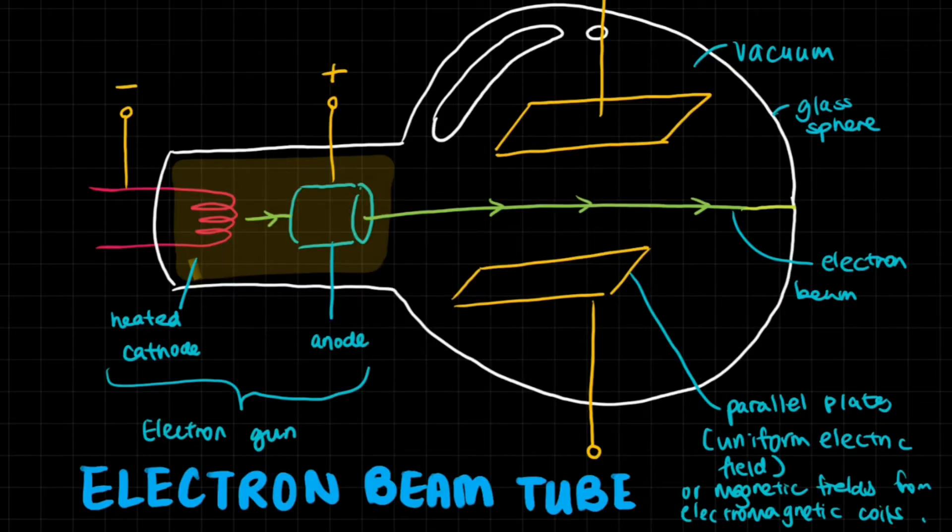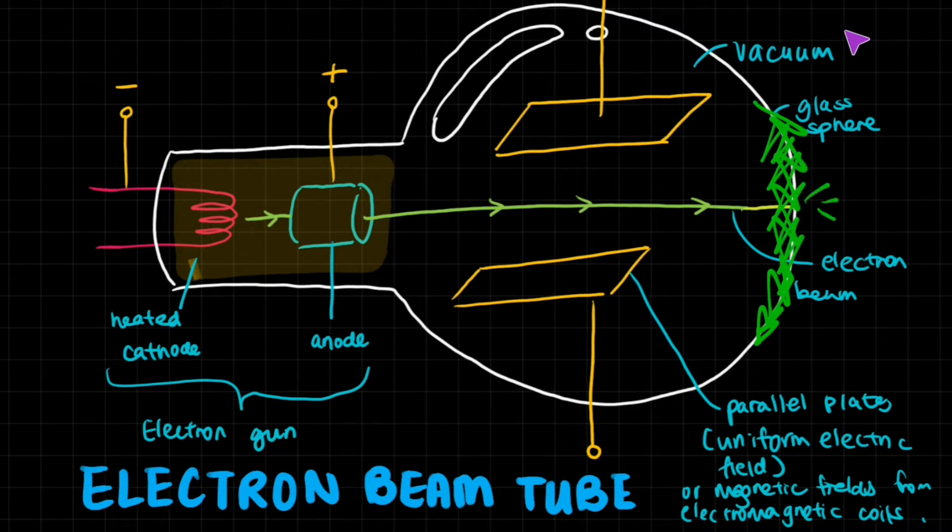Now we're going to look at a very useful apparatus called an electron beam tube. This thing shoots a beam of electrons onto a glass sphere, like a light bulb. On this side of the glass sphere wall, there is phosphor powder. The phosphor powder lights up when electrons strike it, so we can see where they're striking because it's going to have a little flash of light.